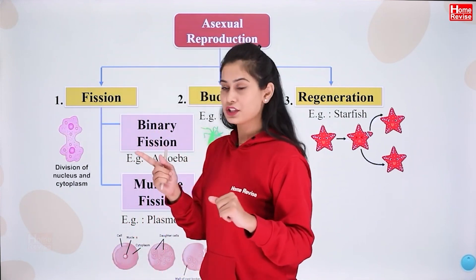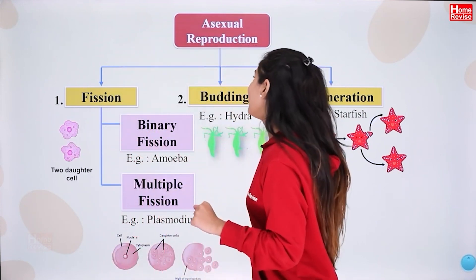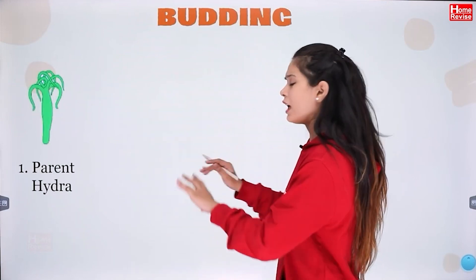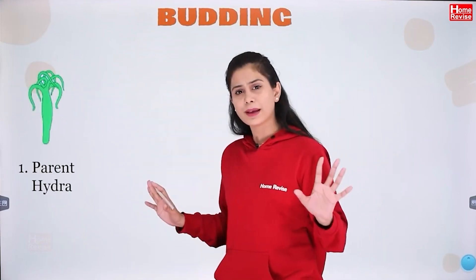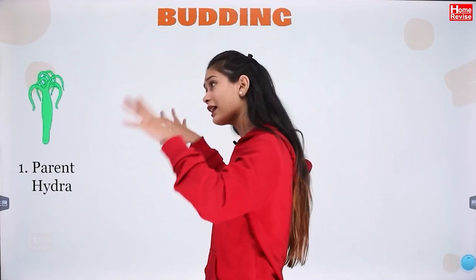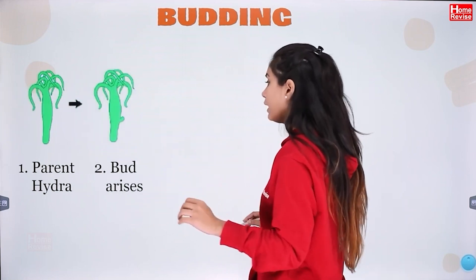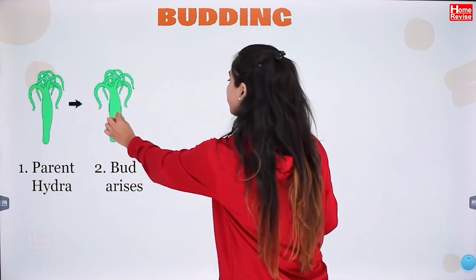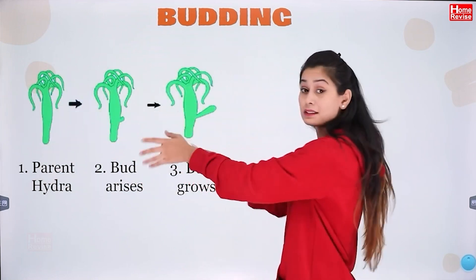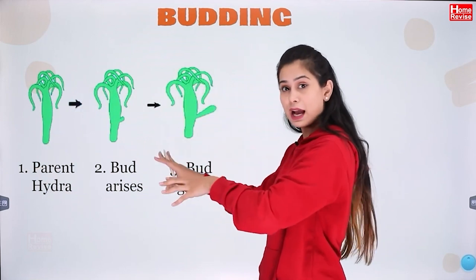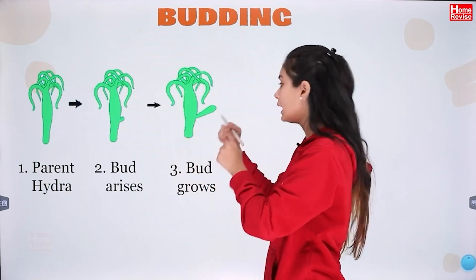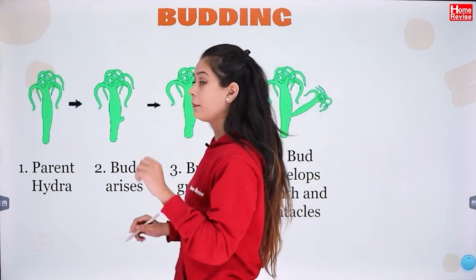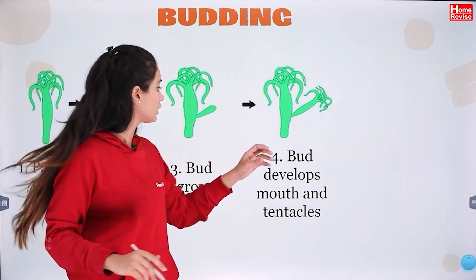We have studied reproduction in plants. Now let's see a little about budding — not much, only two points, because we will focus more on human reproduction. A parent hydra grows a small bud. This diagram and process can be asked in exams. The bud grows.